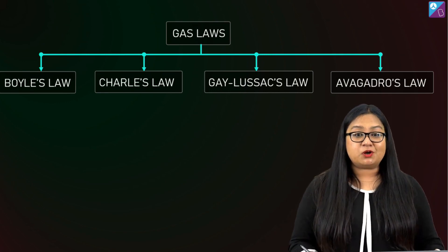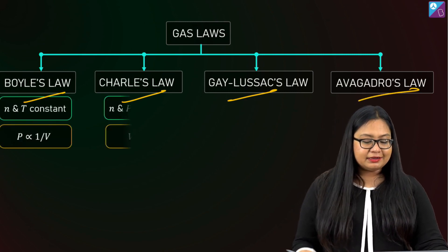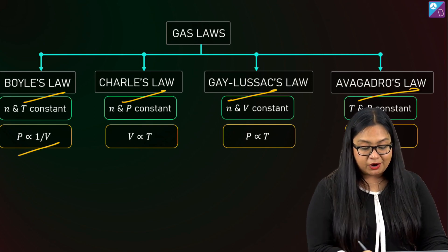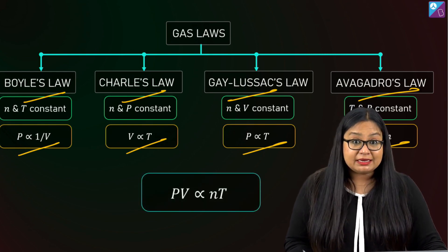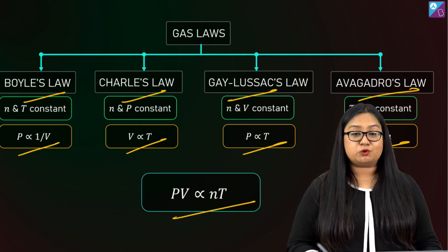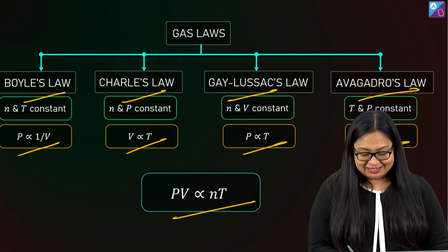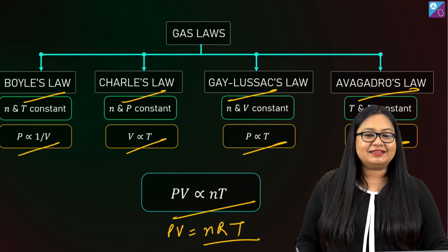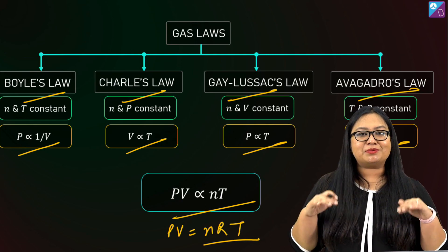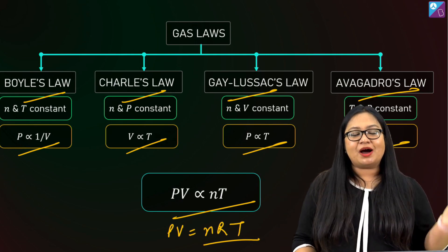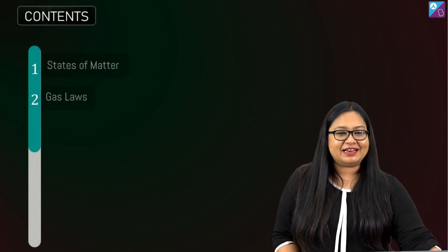Taking all these laws together: Boyle's law gives PV = constant, Charles' law gives V ∝ T, Gay-Lussac's gives P ∝ T, and Avogadro's gives V ∝ N. Combining all of these, we get PV ∝ NT. The constant of proportionality is R, the ideal gas constant, giving PV = nRT. Once you remember the ideal gas equation well, you can automatically recall all of these different laws separately.